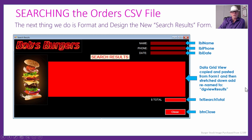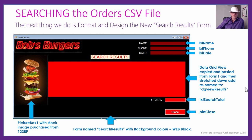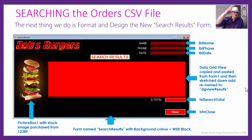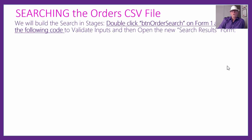The search results form is named SearchResults.vb, with the background color set to black and a stock image from 123rf — though any image works. Putting all the search and display code into this separate form compartmentalizes the code nicely, since Form 1 already has a lot of code for taking and saving orders. We'll build this in stages, starting by double-clicking the btnOrderSearch button on Form 1.